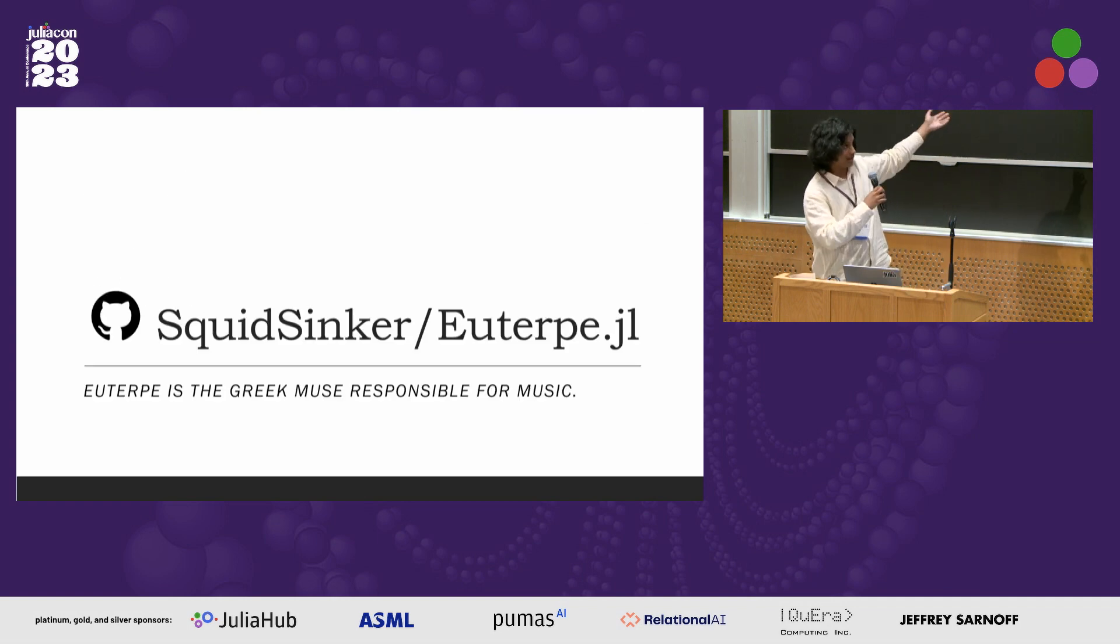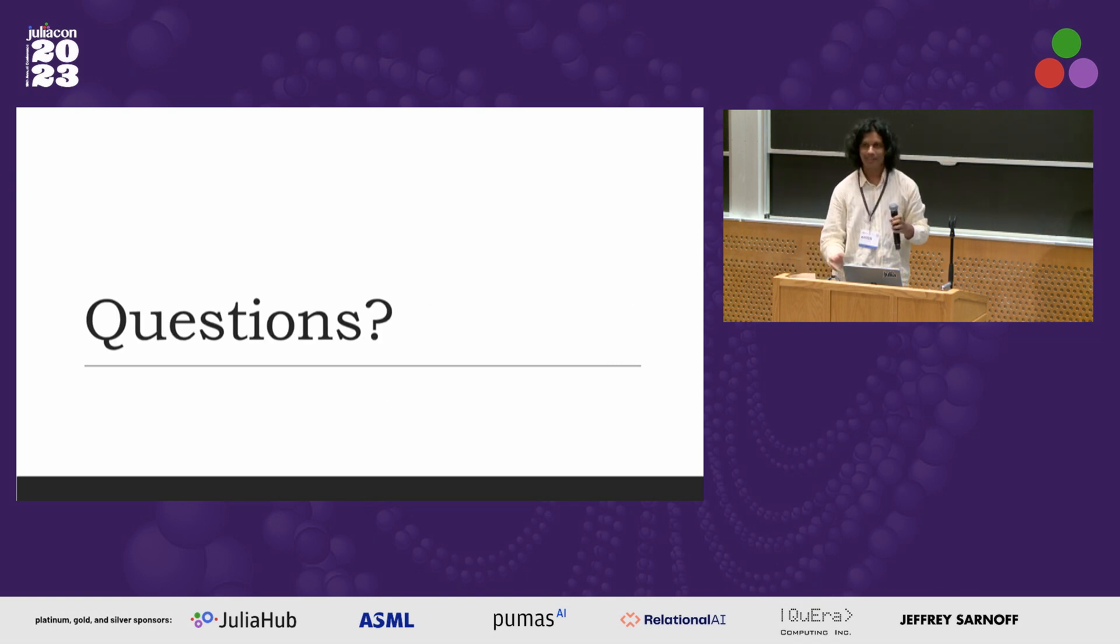This is where the current code base can be found. It is named after the Greek muse responsible for music. It is Euterpe, is the right way to pronounce it, I'm fairly sure. Though we may be wrong. Any questions?